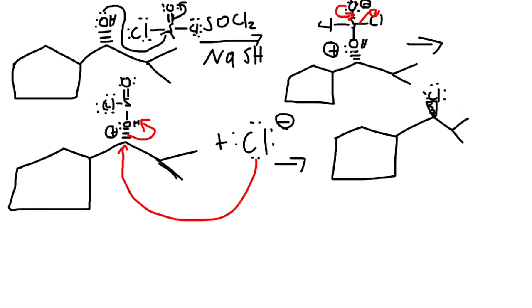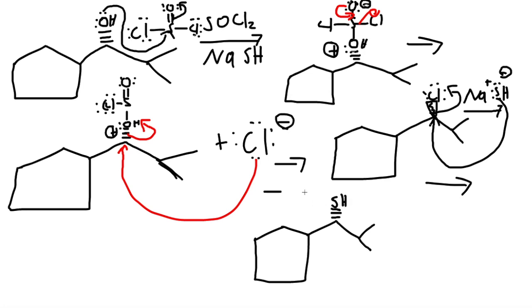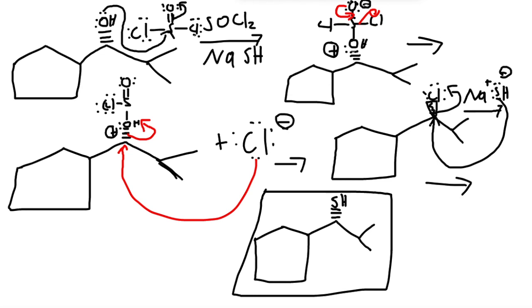Now we must react with NaSH. The sulfur on SH has a negative charge — one of its electrons attacks from the backside, making the chlorine leave as the leaving group. We get our final product: back on that dash, inversion has happened again. SH is now on a dash. This is our final product for this problem. And this was about thionyl chloride and its use in reactions where OH is a bad leaving group.